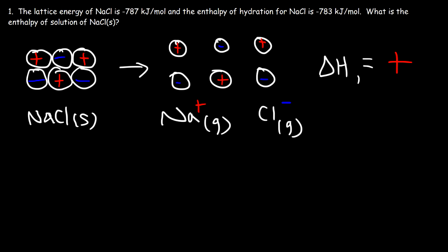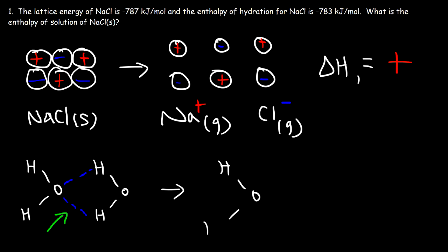The second thing we need to do is separate water molecules from each other. In order for water to dissolve sodium chloride, the water molecules that are bonded together by hydrogen bonds have to separate from one another in order to hydrate or solvate the sodium chloride ions. Some of the hydrogen bonds have to break. The enthalpy change for this process, delta H2, is also positive — that's an endothermic process.